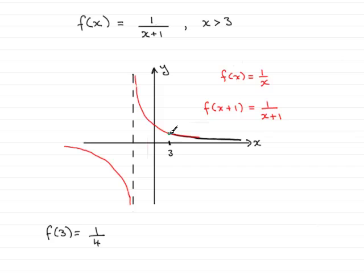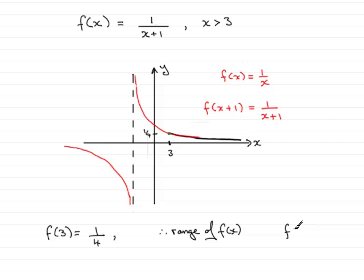So this point here is at a height of one quarter. When it comes to the range, the range of f of x is going to be that f of x is greater than 0, but less than one quarter. And that brings us to the end of this particular question.